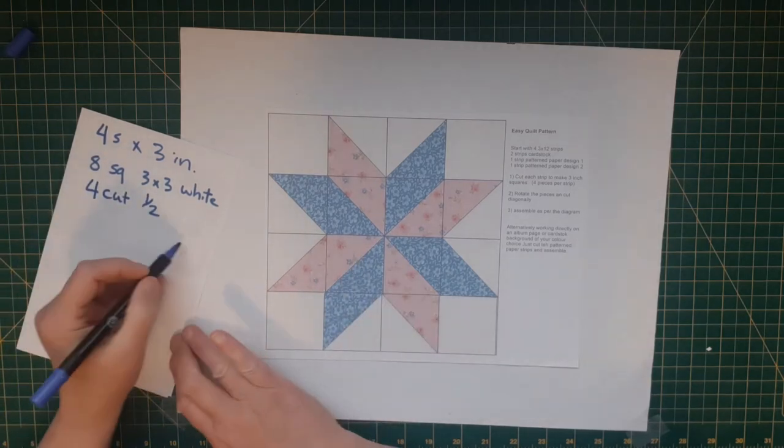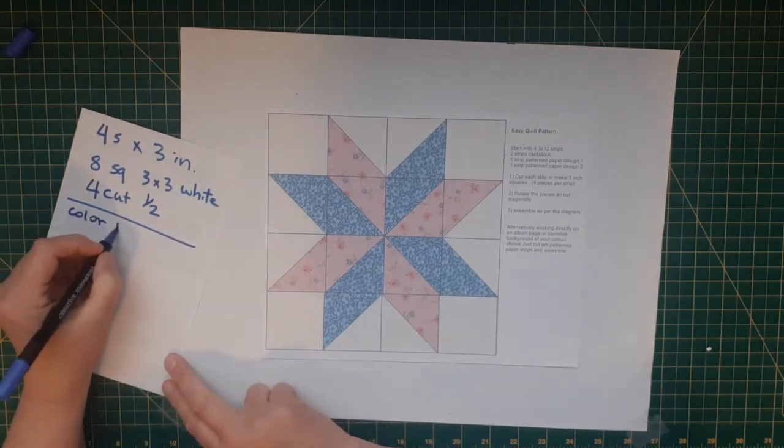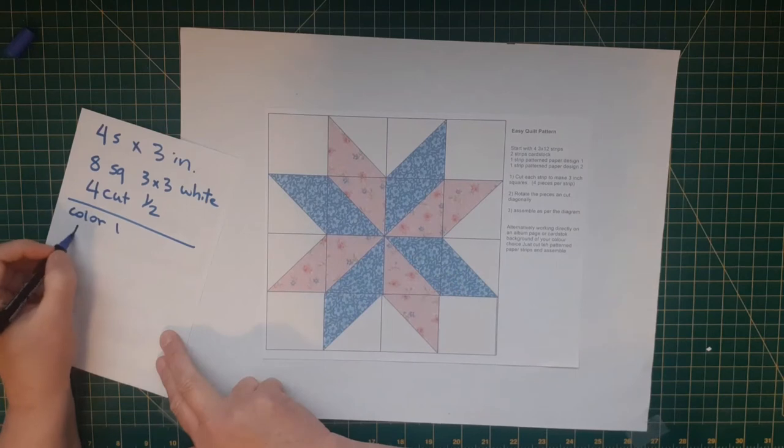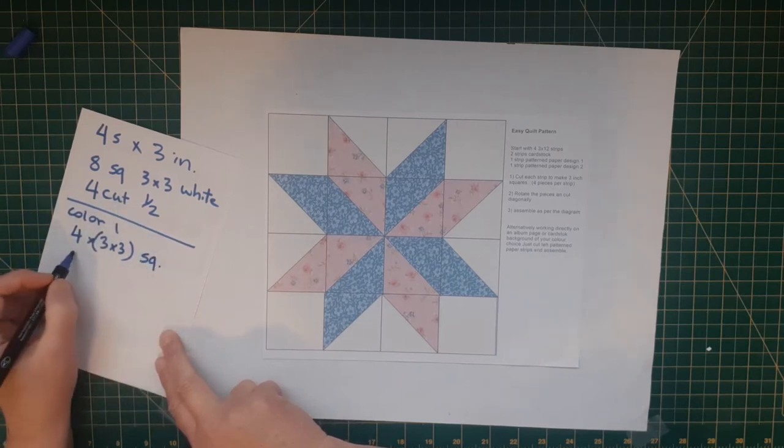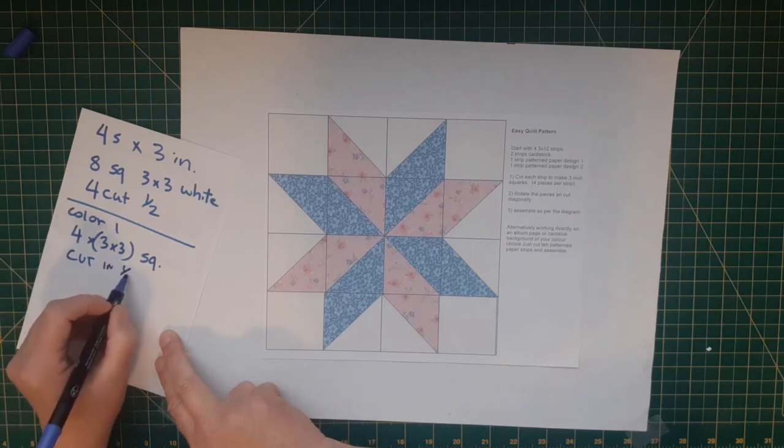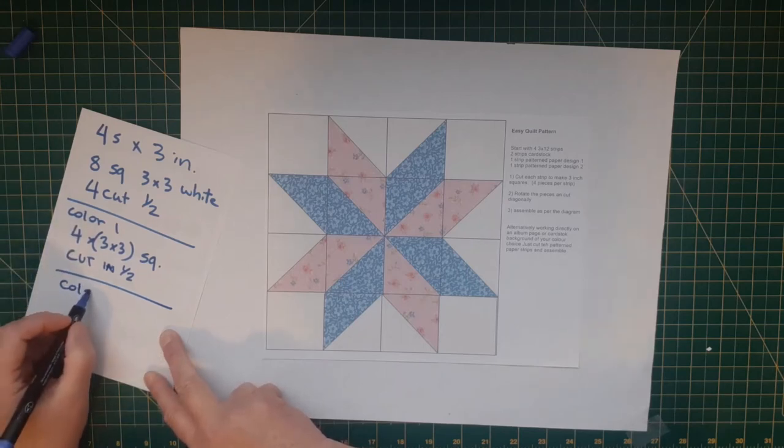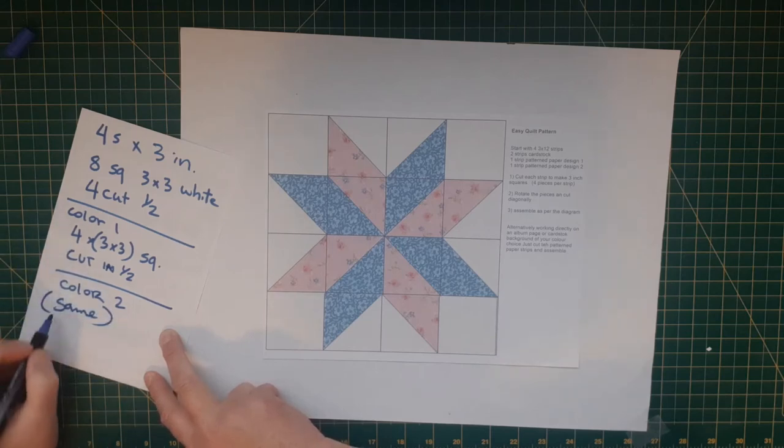And with this pattern again, I'm going to take one, two, three, four of the squares. And I'm going to take four of them cut in half. And that will cover all my white. For my next color, my color one, I'm going to need one, two, three, four, four three by three squares. And I'm going to cut them all in half. And then color two will be the same as color one.